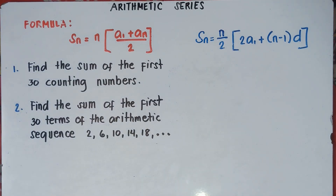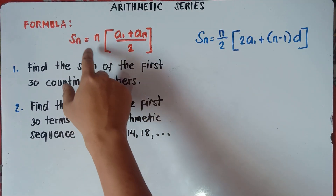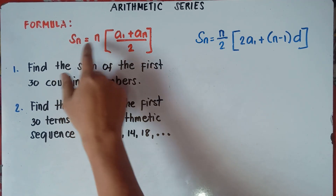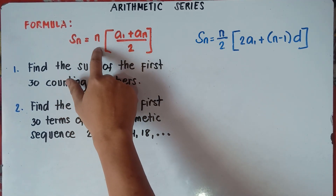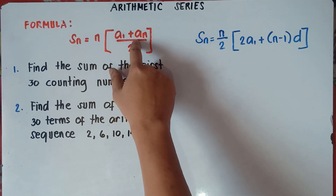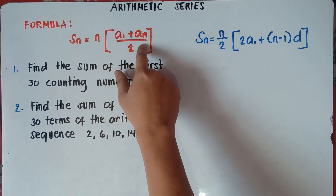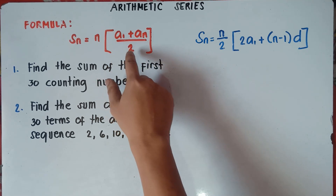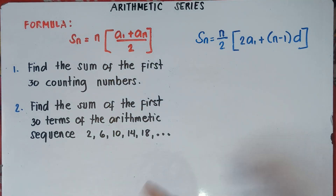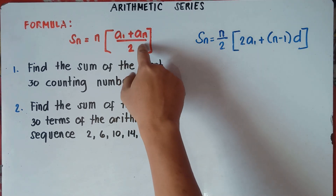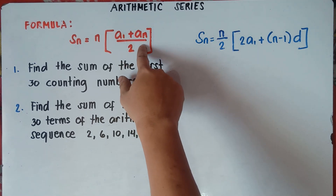Now we do have two formulas in solving for the sum. First, we have S of N — this is the sum of the sequence you're looking for. N is the number of terms, bracket A sub 1 plus A sub N. A sub N is the last term, A sub 1 is the first term, divided by 2. We will be using this first formula if we have the value of our last term.